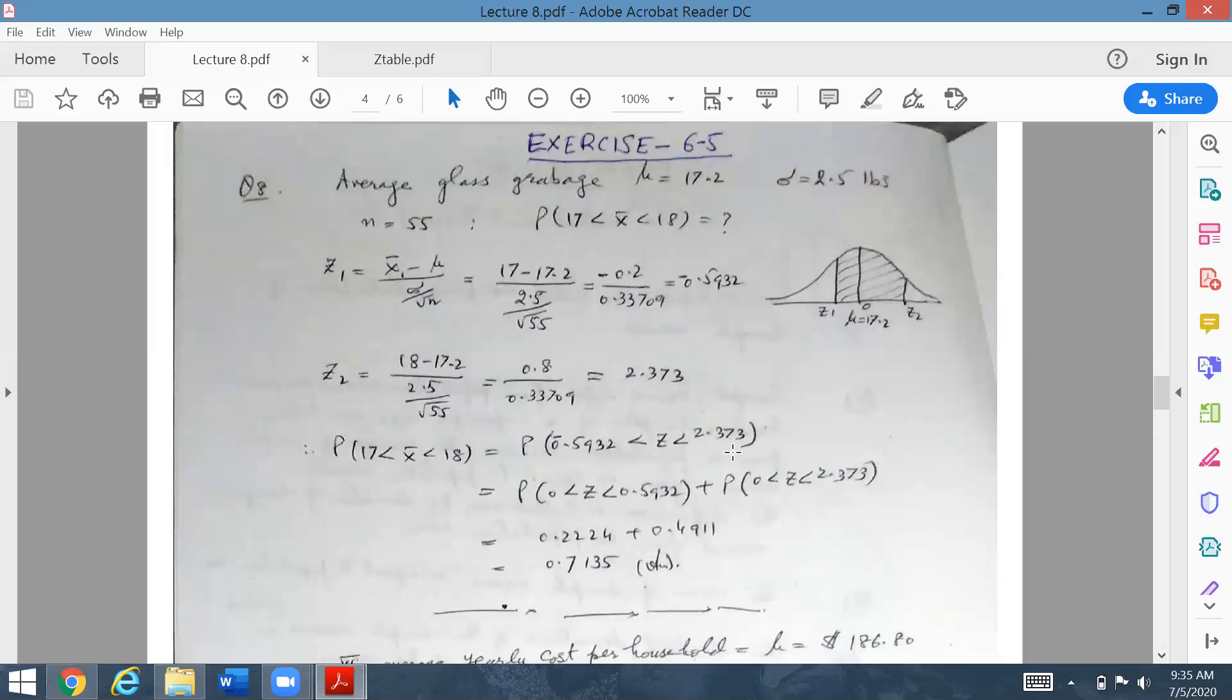Now you draw the figure. Here you have a normal distribution curve. Zero is always there in the middle. Z1 value is minus 0.593, so it comes on the left side. Z2 equals 2.37, you write here. This shaded area is the probability area you need to calculate.